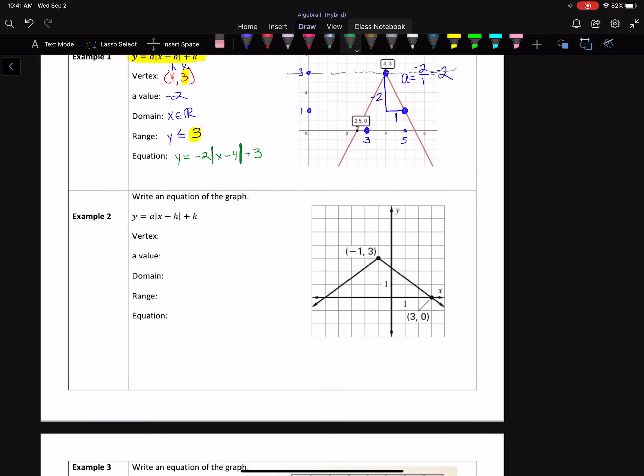So here we go. Second example, same information. So my vertex is at negative 1, 3. So that is h and k. My A value here, so you've got to pick two points, and actually this graph was pretty nice and gave you two points.